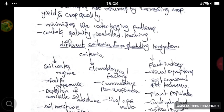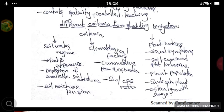Let's see the different criteria for scheduling of irrigation. There are three different criteria: soil water regime, climatological factors, and plant indices. The soil water regime includes the feel and appearance method, depletion of available soil moisture, and soil moisture tension. The climatological factors include cumulative pan evaporation, potential evapotranspiration, and IW/CPE ratio. The plant indices include visual symptoms, the Sancom soil plot technique, plant population indicator, and critical growth stress.